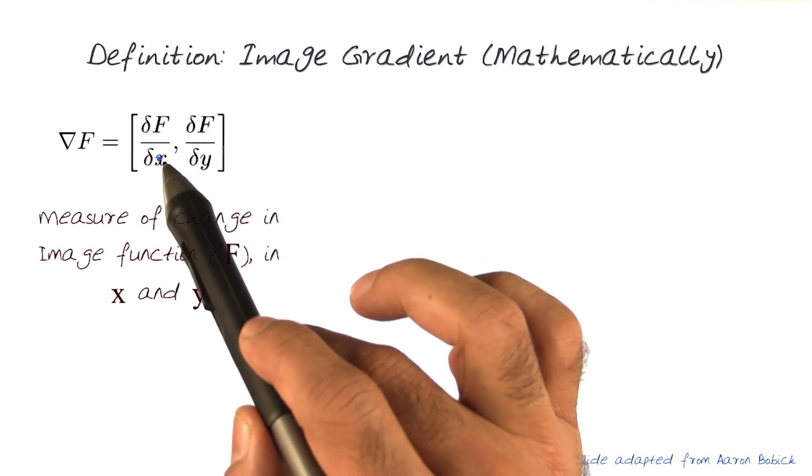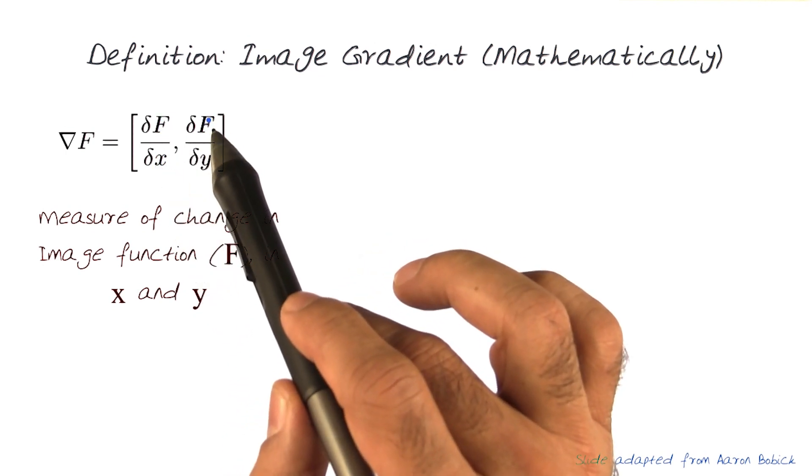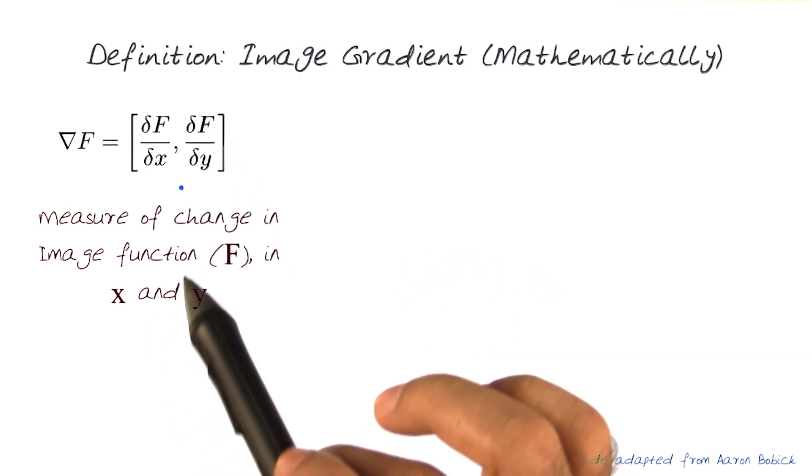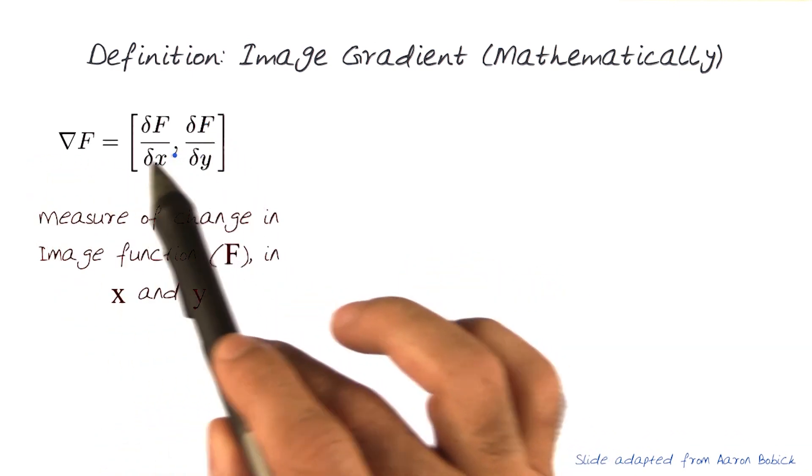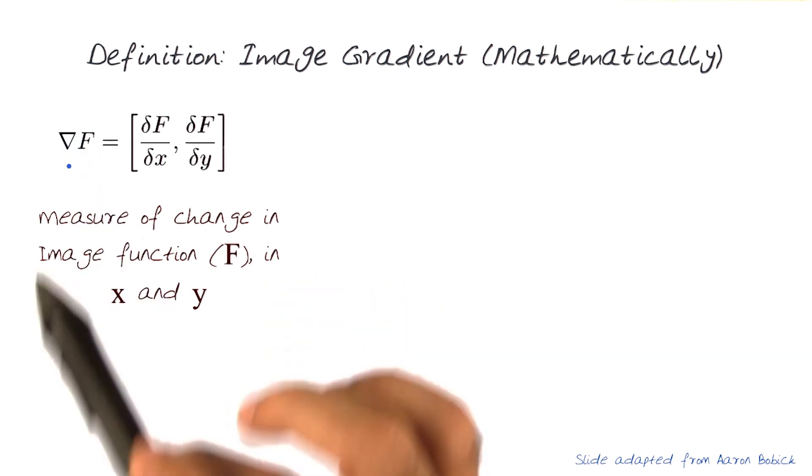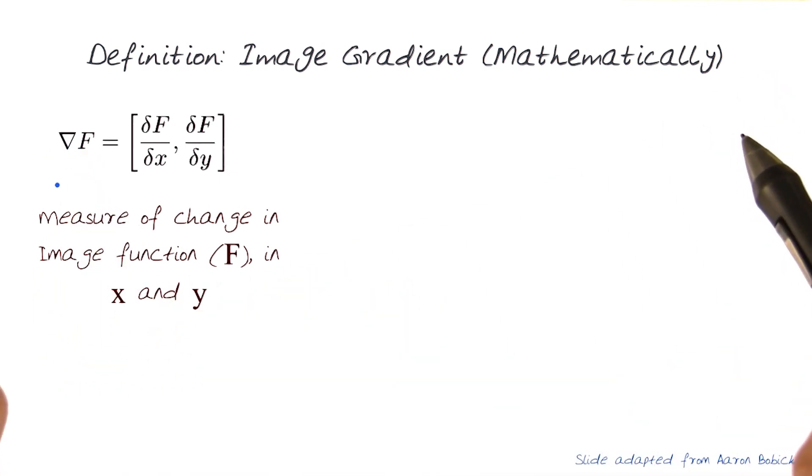which represents an image with respect to x, and then differential of the function image f with respect to y. And of course, both dimensions of this, represented by del f, is the gradient of the image f. In essence, this is the way to measure the change in image function f in both x and y.